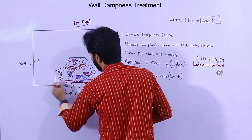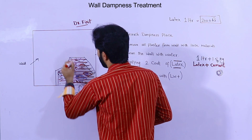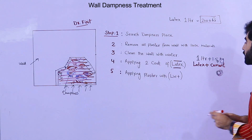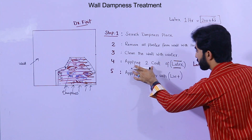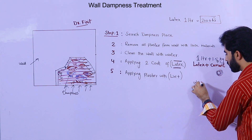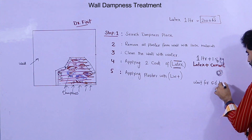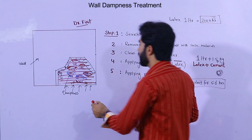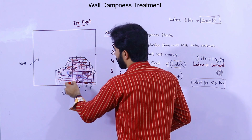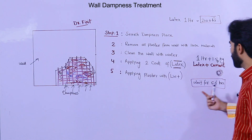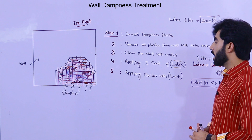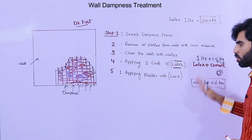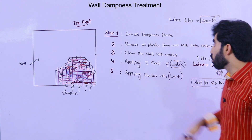Apply the first coat horizontally, just like painting, using a brush. After applying the first coat, wait for five to six hours. Then apply the second coat vertically — as you can see in the picture. After the second coat, again wait for five to six hours before proceeding.